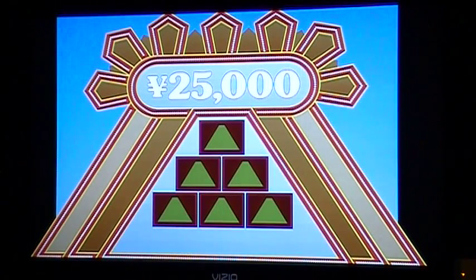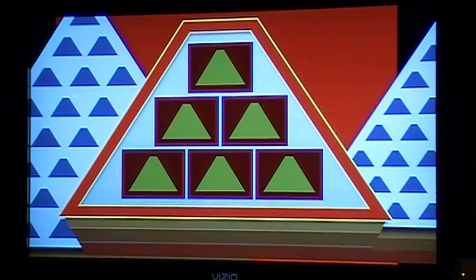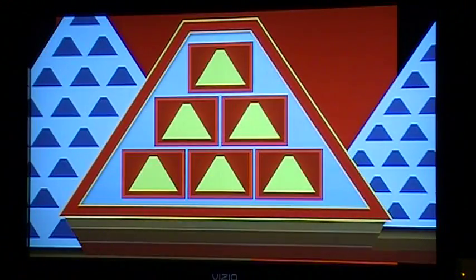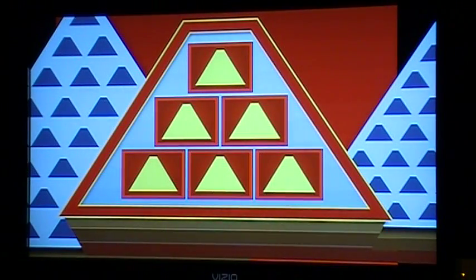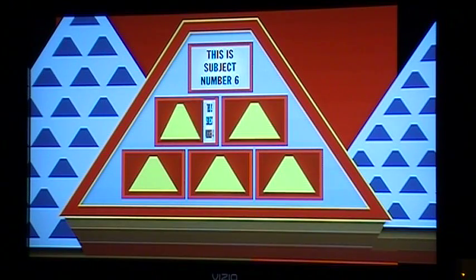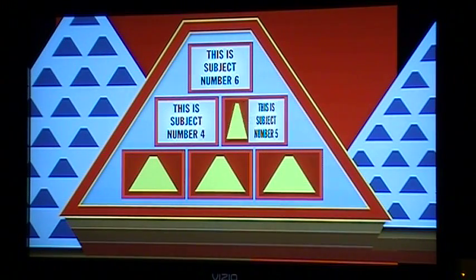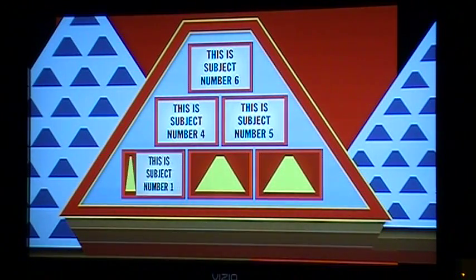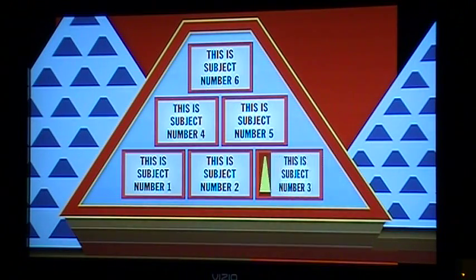And then we move on to the main game and it looks like this. Push a button to light it up — that also puts the 7-11 behind the category it's supposed to go behind. And we reveal the subjects; I just have generic names in here so far. We've got subject number 6, subject number 4, and so on.